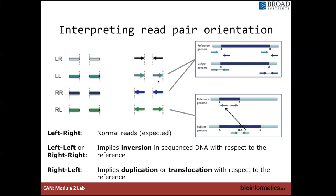So these left-left or right-right pairs are seen in inversions and are colored teal and blue respectively. And I don't have time to go into the specific details of how this all works, but the IGV user manual online gives a pretty good thorough explanation.